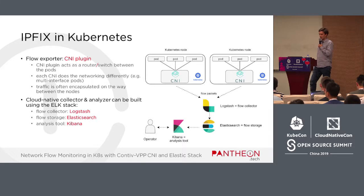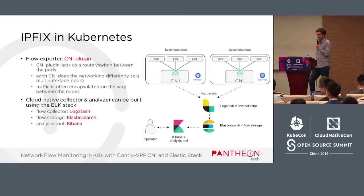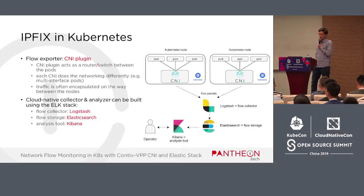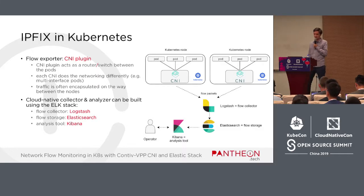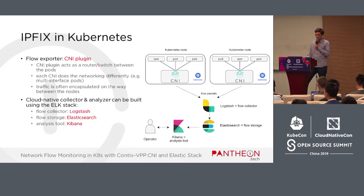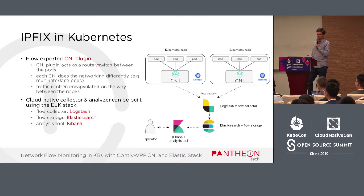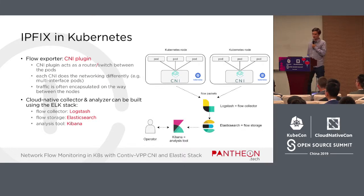For flow collector, storage, and analysis — since we are in the cloud-native world — we could use the ELK stack, which stands for three open source components: Logstash, Elasticsearch, and Kibana. Logstash can act as a flow collector; it already supports processing of IPFIX and NetFlow information. Elasticsearch provides storage and acts as a search engine for all stored flows, and it is very good at horizontal scaling. Kibana is our UI that allows us to search in our flow storage.